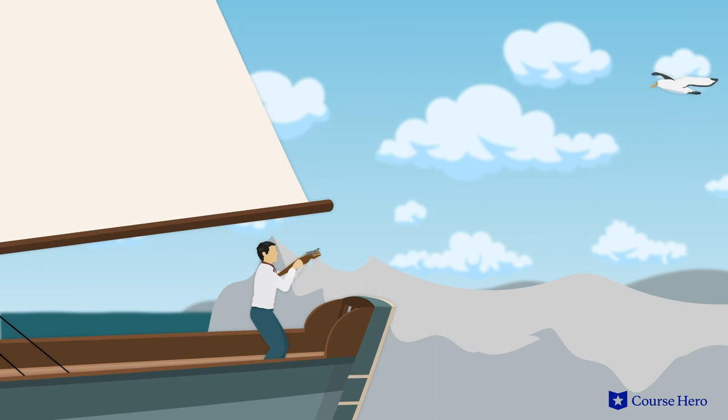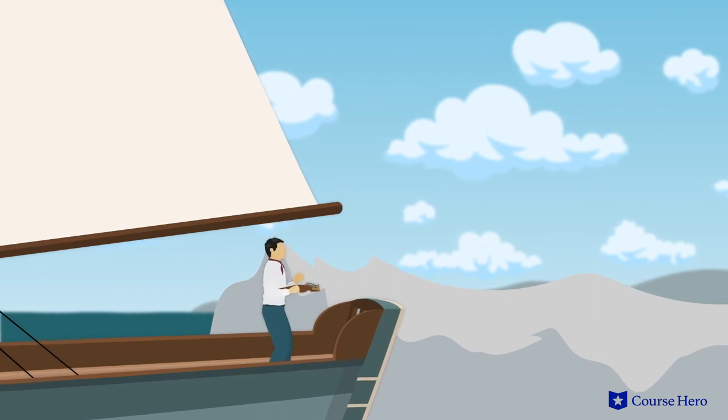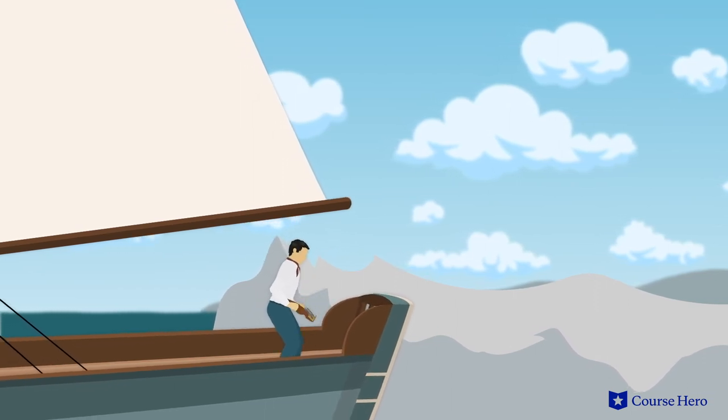When the mariner shoots the albatross, he commits a sin that he must serve penance for in the hope of absolution. The cycle of the mariner's penance is reminiscent of the wandering Jew narrative, a Jewish man doomed to walk the earth because he taunted Jesus on his way to the crucifixion. He cannot die until Jesus comes again, an eternal penance.